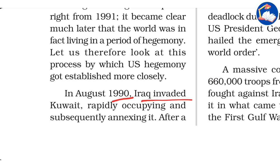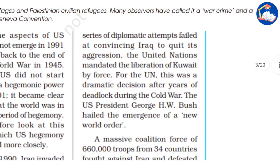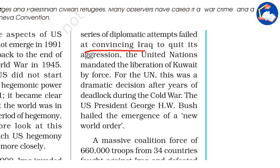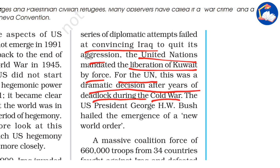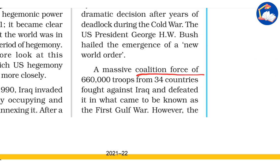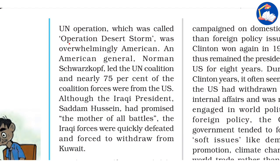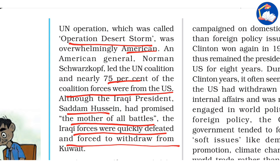In August 1990, Iraq invaded Kuwait, rapidly occupying and subsequently annexing it. After a series of diplomatic attempts failed to convince Iraq to quit its aggression, the United Nations mandated the liberation of Kuwait by force — a dramatic decision after years of Cold War deadlock. US President George H.W. Bush hailed the emergence of a new world order. A massive coalition force of 660,000 troops from 34 countries fought against Iraq and defeated it in what came to be known as the First Gulf War.